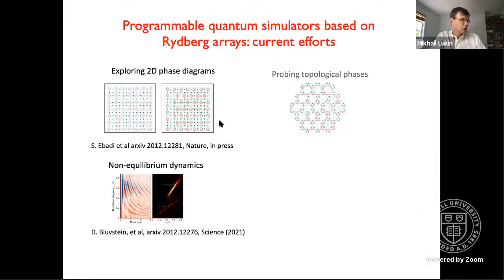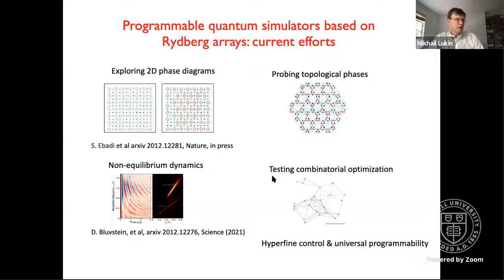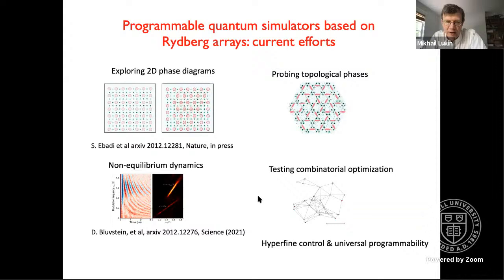Over the last year, we have enjoyed exploring this system in a variety of ways. We have been exploring more complicated states in this two-dimensional phase diagram and studying non-equilibrium dynamics. We have shown that many-body scars can be stabilized by periodic driving in a quite non-trivial way. We have also explored topological phases and want to use this machine as a computational tool for combinatorial optimization. But before discussing those, let me pause and ask if there are any questions. Ivan asks: what is the set of observables that are experimentally accessible?